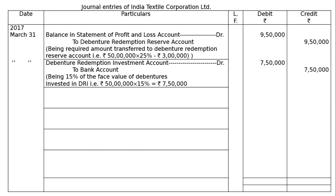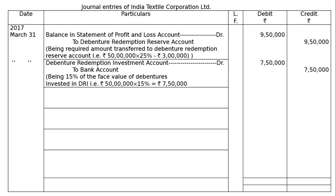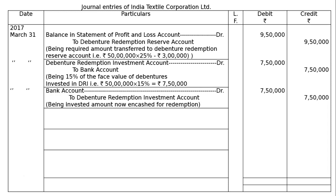Regarding the debenture redemption, we have to realize the investments before redemption. Bank account is debited to Debenture Redemption Investment account — Rs 7 lakh 50,000 — being invested amount now converted to cash for redemption.